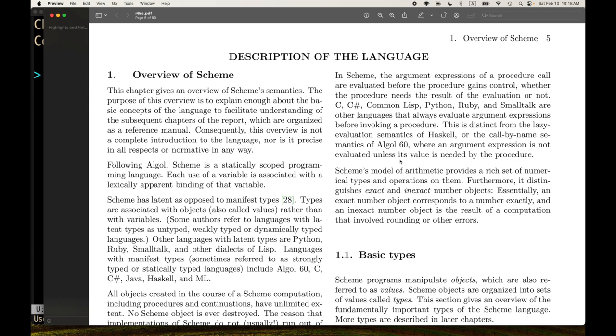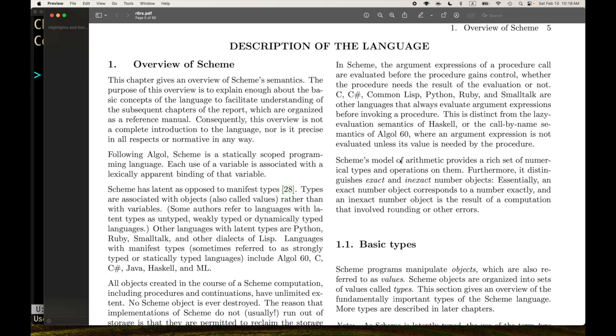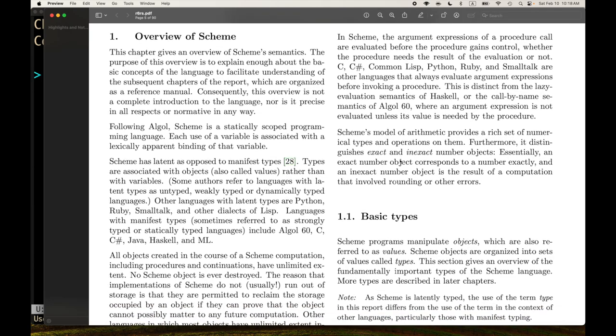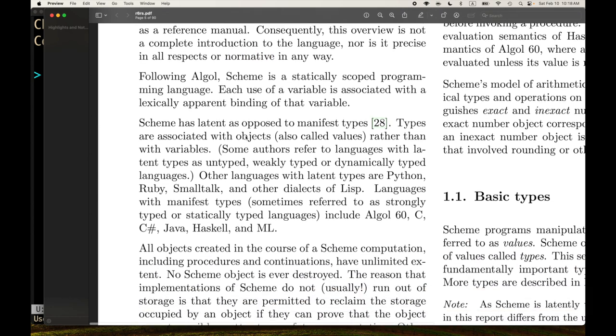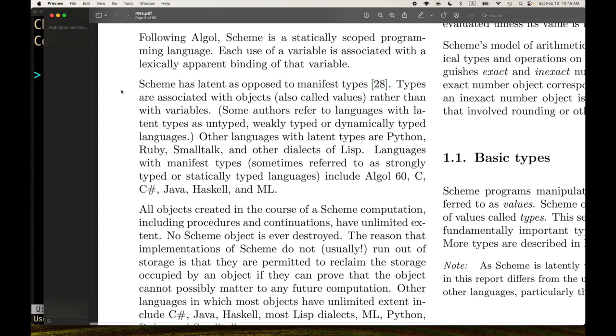Okay, we're moving on to page five, description of the language. Overview of Scheme. This chapter gives an overview of Scheme's semantics. The purpose of this overview is to explain enough about the basic concepts of the language to facilitate understanding of the subsequent chapters of the report, which are organized as a reference manual. Consequently, this overview is not a complete introduction to the language, nor is it precise in all aspects or normative in any way. So you can't use the overview as a specification. This is more high-level intuition and a basic guideline so that you can understand the language for the rest of the report.